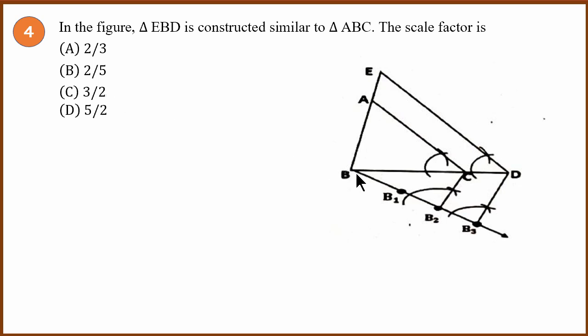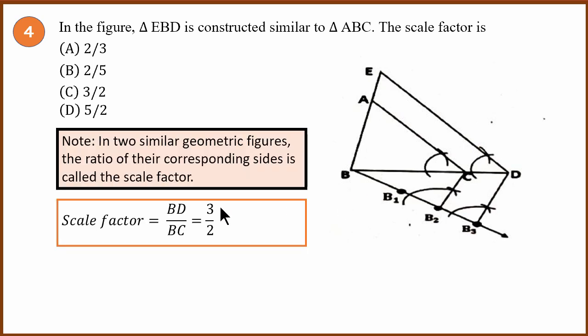So for that, we look at this construction and we find out how many units BC is and how many units BD is. Because the scale factor is given by BD by BC, it has to be ratio of the corresponding sides. What is the length of BD in units? 1, 2 and 3, which is 3. And what is the length of BC in units? 1 and 2, which is 2. So the answer is C.